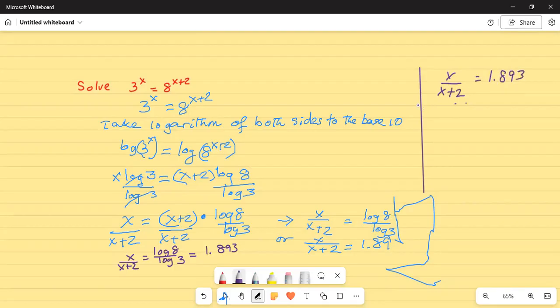Now, I multiply by x plus 2 on both sides. x plus 2 times x by x plus 2 is equal to 1.893 times x plus 2. So, this and this will cancel. So, x is equal to 1.893 times x plus 2.